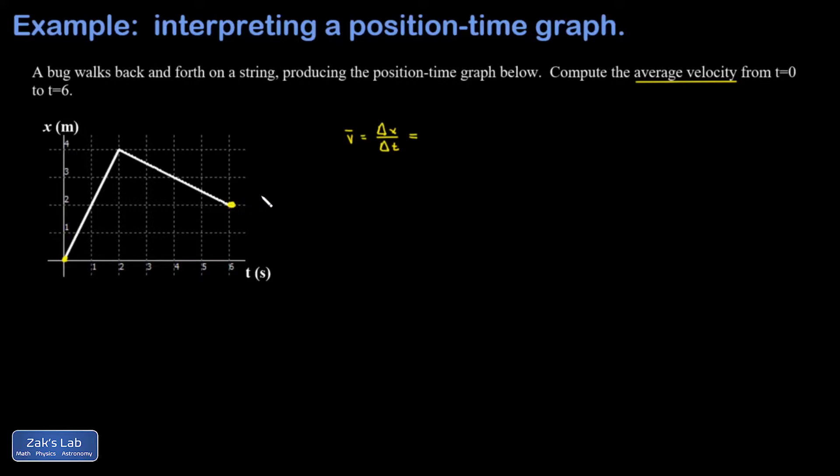All that matters is what the final and initial position values are. That final position value is 2 meters, the initial was 0. The final time was 6 seconds, the initial was 0. So we don't care about those zeros, and this reduces to one-third meters per second, or as a decimal to three sig figs, 0.333 meters per second.